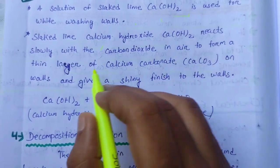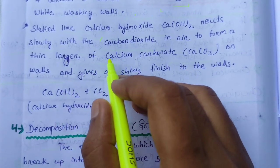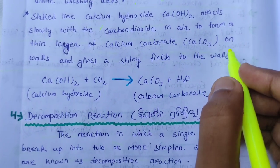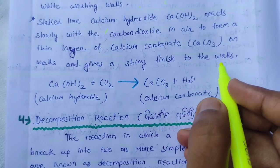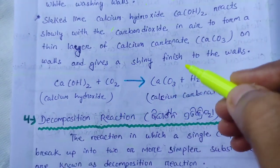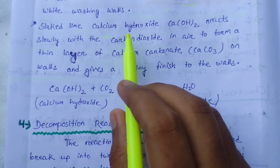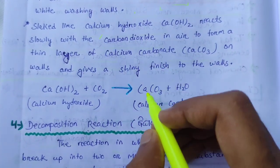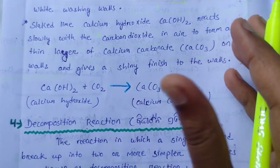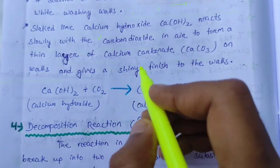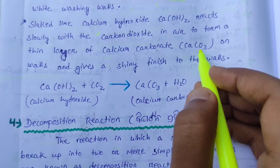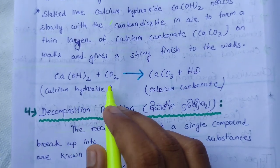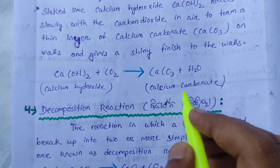White washing forms a thin layer of calcium carbonate on the walls and gives a shiny finish to the wall. This happens because carbon dioxide reacts with Ca(OH)₂ and changes into calcium carbonate, which gives a shiny effect.